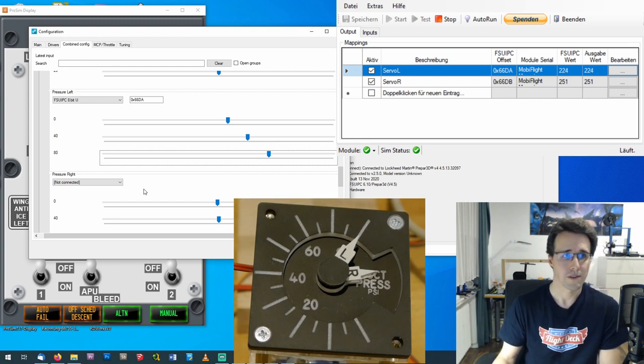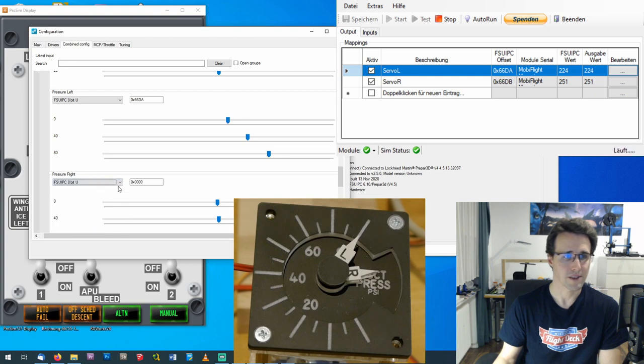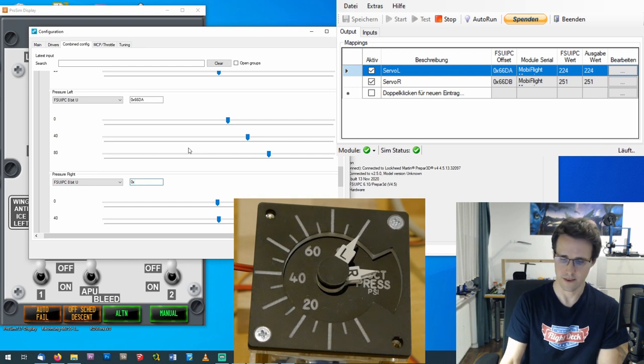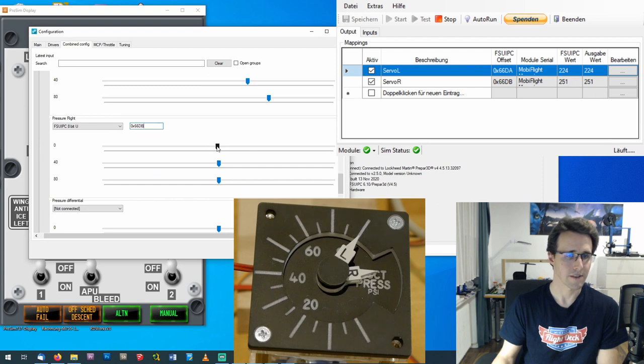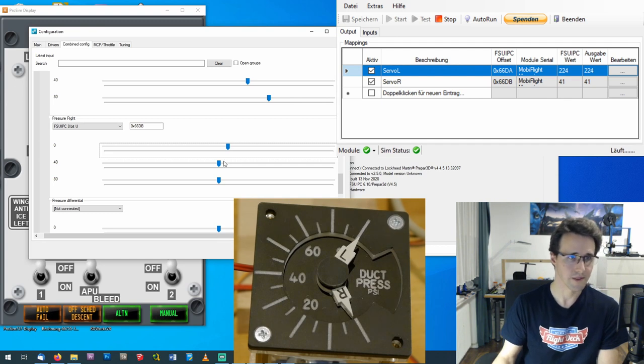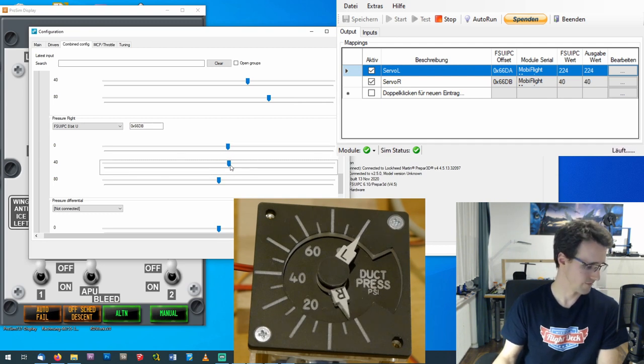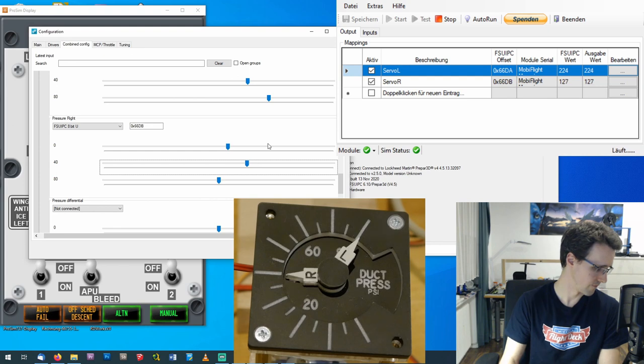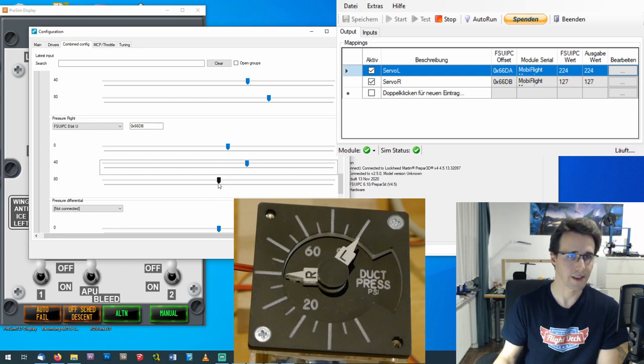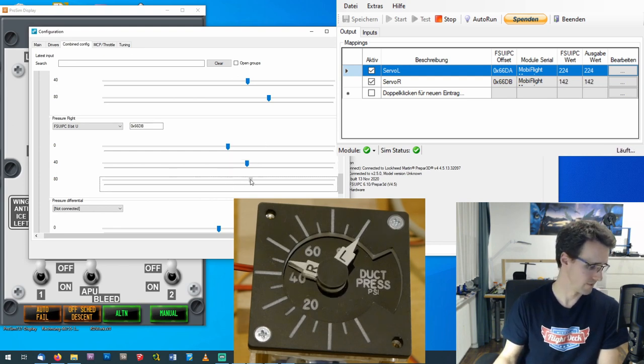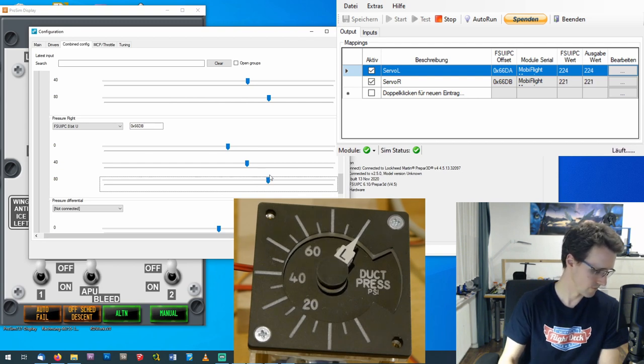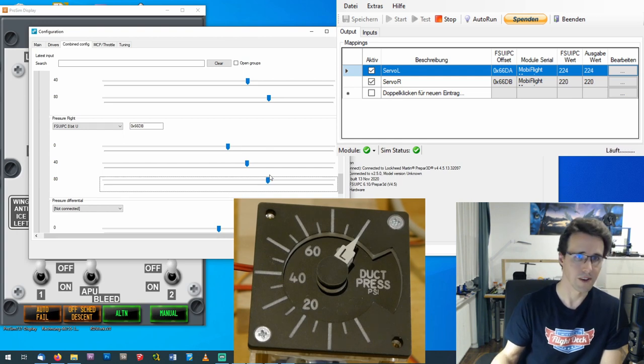And now the same with the pressure right value FSUIPC 8 bit unsigned and the value 66DB. And now find the zero point. There it is and the 40 and the 80 value. There we are.